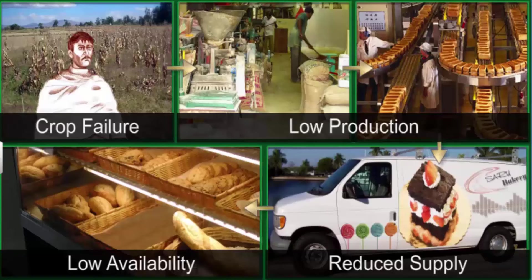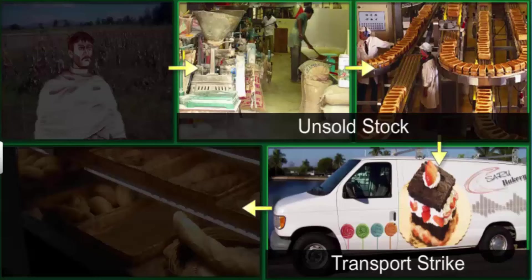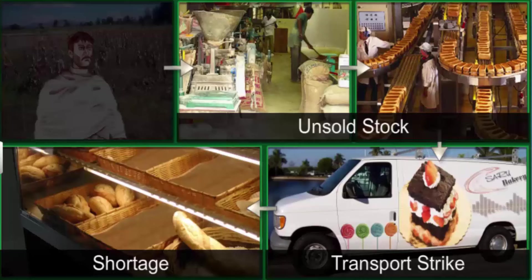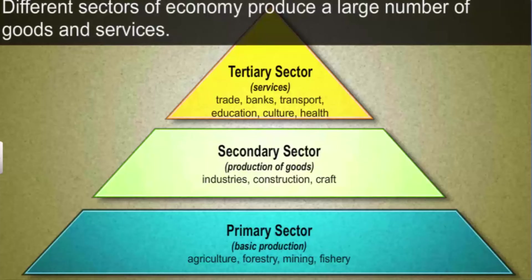Similarly, if the transporters go on strike, unsold stock will pile up with the manufacturers while there will be a shortage of goods at the shops. The primary, secondary, and tertiary sectors of the economy involve the production of a large number of goods and services.